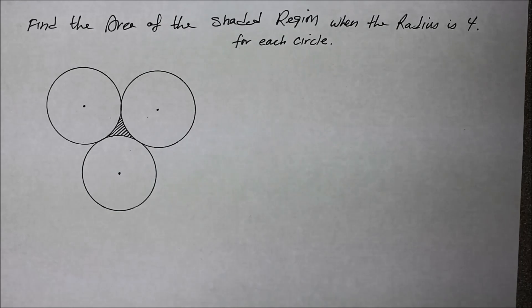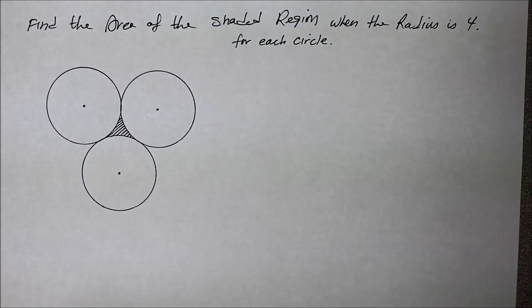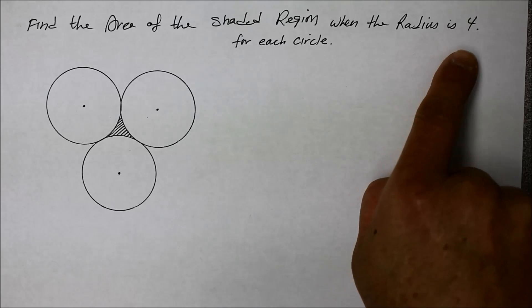Hi. This instructional video is about circles. Here we have three identical circles with the same radius. Each radius is four units.